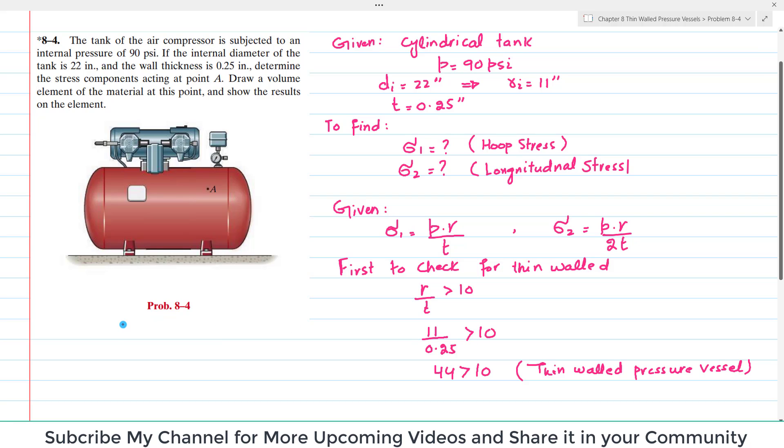Now you have to find the hoop stress, that is sigma 1. Hoop stress sigma 1 equals P times R divided by T, where P is the internal pressure, 90 psi, R is the inner radius which is 11 inches, divided by thickness 0.25 inches. So when you calculate it, the hoop stress comes out to be 3.96 KSI.